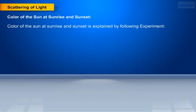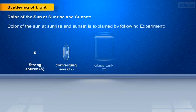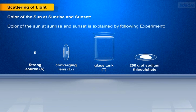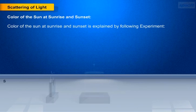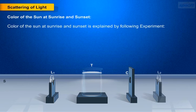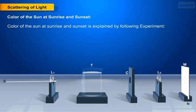To do this experiment, required apparatus are: a strong source S, converging lens L1, glass tank T, 200 grams of sodium thiosulfate. Place a strong source S of white light at the focus of a converging lens L1. This lens provides a parallel beam of light.